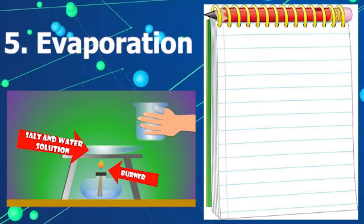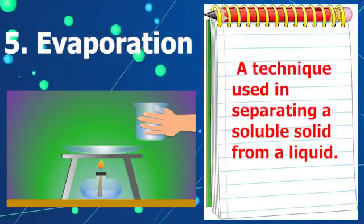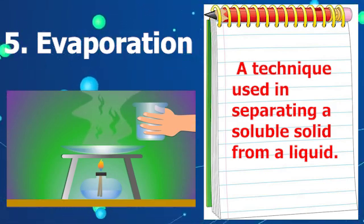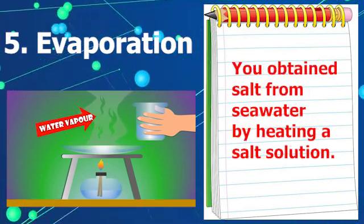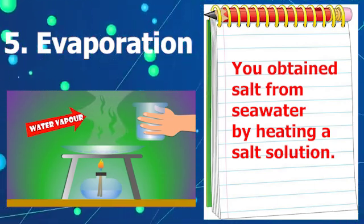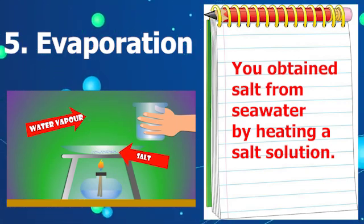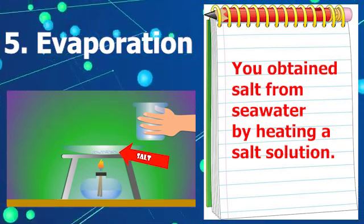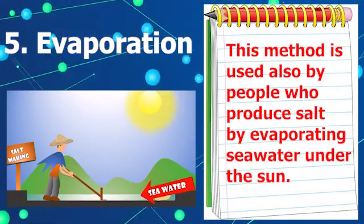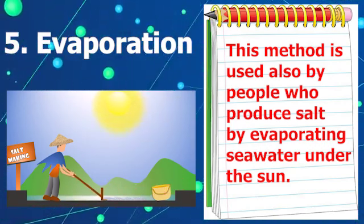Number five: evaporation. It is a technique used in separating a soluble solid from a liquid. You can obtain salt from sea water by heating a salt solution. This method is also used by people who produce salt by evaporating sea water under the sun.